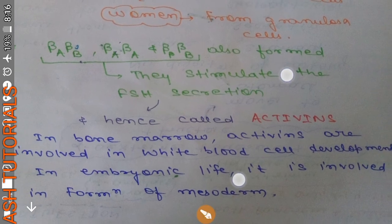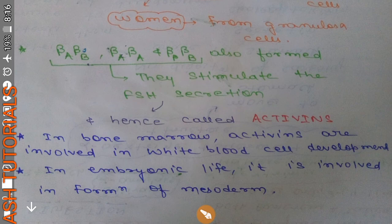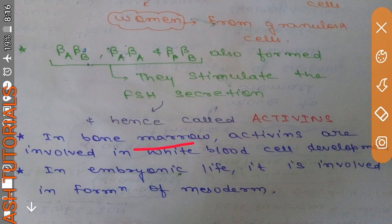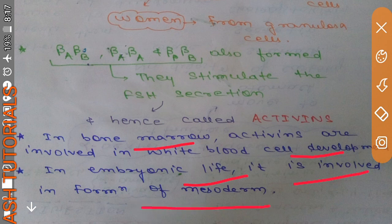Now coming to the functions of activins — what functions can activins play. Basically there are two functions discovered to date. The first one is that in bone marrow, activins are involved in white blood cell development and formation. And in embryonic life, activins are seen to be involved in the formation of mesoderm. So these are the two basic functions of activins.